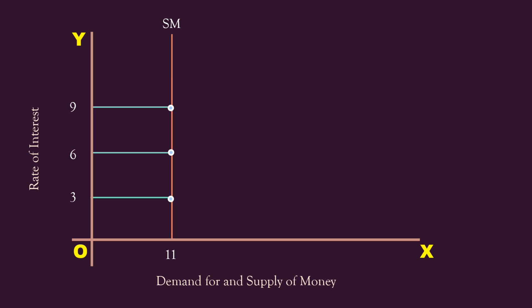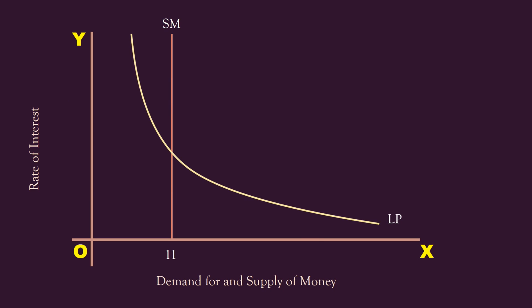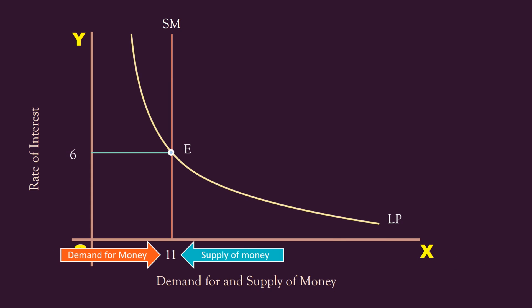The curve MS represents the supply curve of money; it is vertical and parallel to the y-axis. Placing the demand curve for money LP on the same graph, both curves intersect at point E. At that point, the rate of interest is six percent, the demand for money is 11 crores of rupees, and the supply of money is also 11 crores of rupees. Since demand equals supply at point E, six percent is the equilibrium rate of interest.